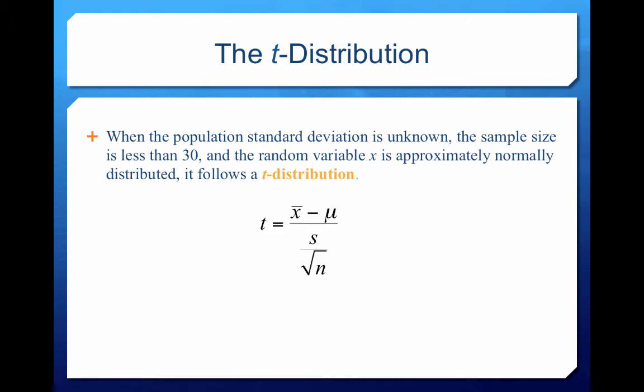When the population standard deviation is unknown, the sample size is less than 30, and the random variable x is approximately normally distributed, then we say it follows what's called a t-distribution. The formula should look a little bit similar to a z-score where you see our sample mean minus our population mean divided by some standard error.